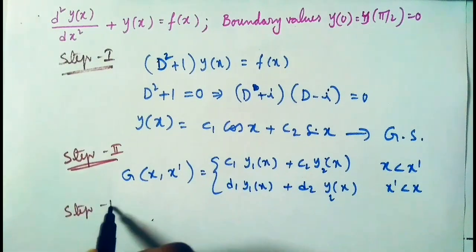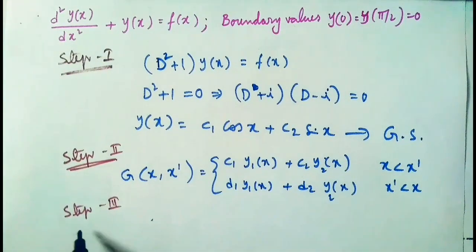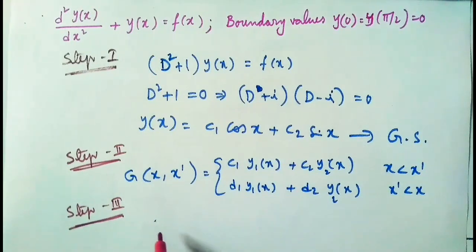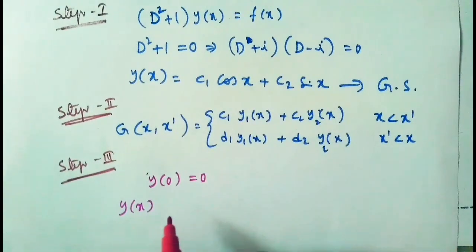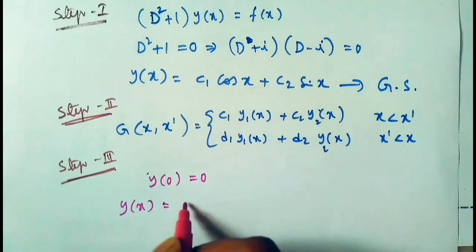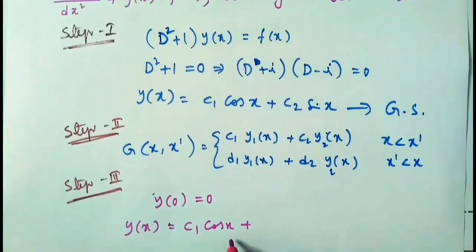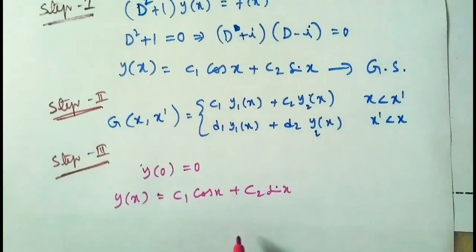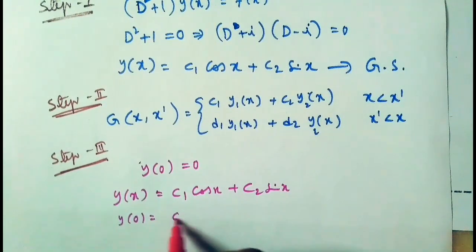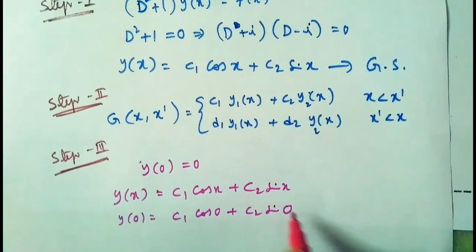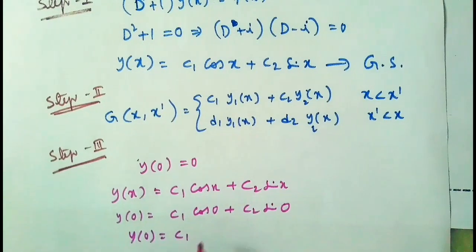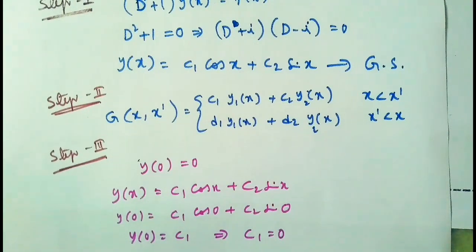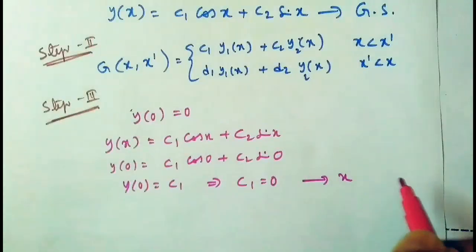Step three: finding constants using boundary conditions. Here y(0) = 0. We have y(x) = c1·cos(x) + c2·sin(x). So y(0) = c1·cos(0) + c2·sin(0). Since sin(0) = 0, we get y(0) = c1, but y(0) = 0, which implies c1 = 0. This applies for x less than x-dash.